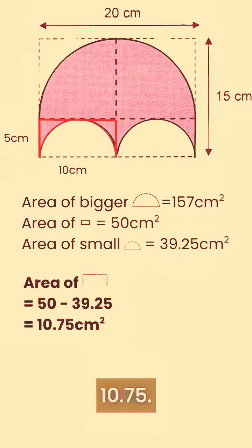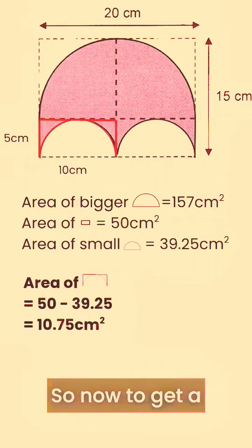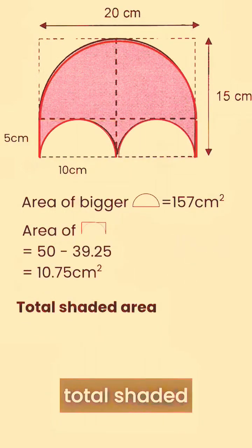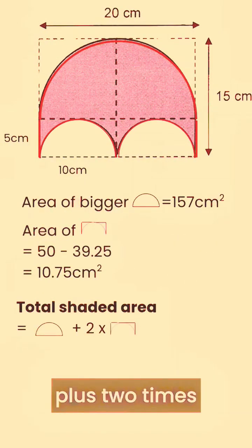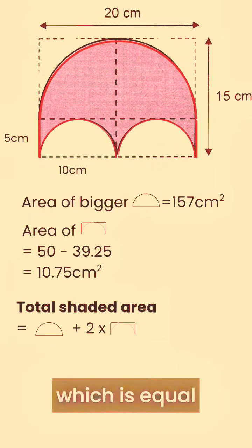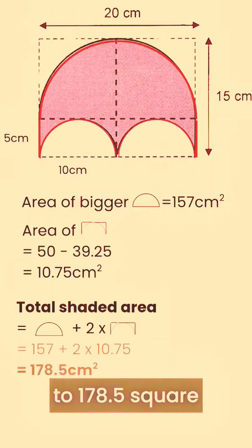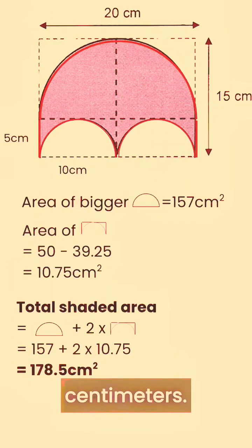That gives us 10.75. So now to get the total shaded area, which is basically the bigger semicircle plus 2 times the shaded area below the big semicircle, which is equal to 178.5 cm².